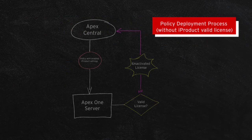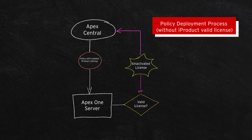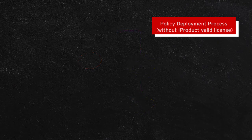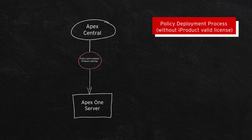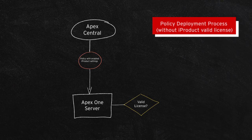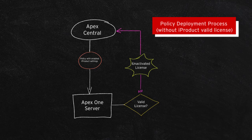Now let's look at the policy deployment flow if there are no valid licenses for iProducts. Apex Central deploys a policy to the Apex One server with enable iProduct settings. After the Apex One server gets the policy, it will check for valid licenses for the iProduct before sending the policy to the iProduct server. If there are no valid iProduct licenses, then Apex One will respond with an unactivated license error code directly to Apex Central.